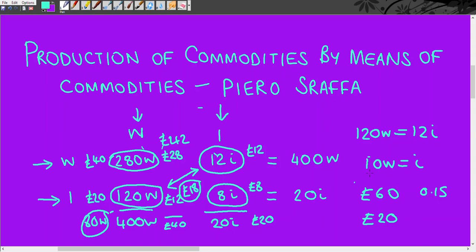It doesn't have to be £40 and £20 specifically. It can be anything in the same proportion — it could be £100 and £200, or £200 and £400. As long as it's in this proportion of 10 wheat to 1 iron, it's fine.